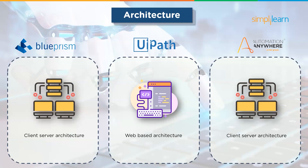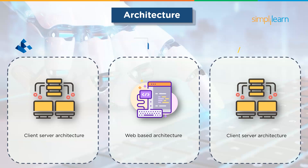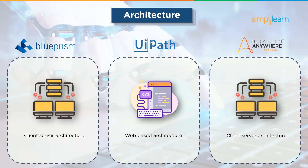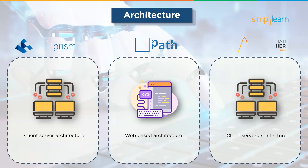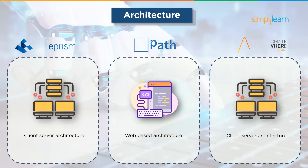The next comparison factor is architecture. An application that runs on the client side and accesses the remote server for information uses the client-server architecture, whereas an application that runs entirely on a web browser uses web architecture. In a client-server architecture, user interaction with the server is always through a user interface on the client side, while in a web application it is through a web browser. Blue Prism and Automation Anywhere both incorporate a client-server architecture, while UiPath uses a web-based architecture.